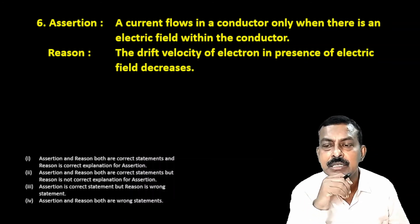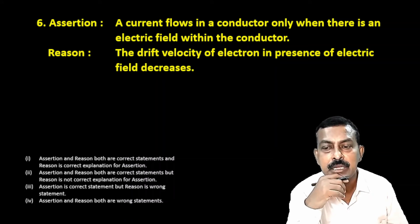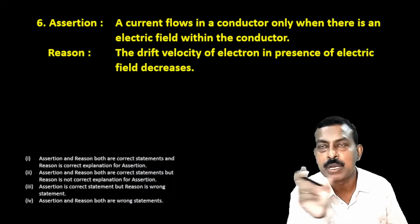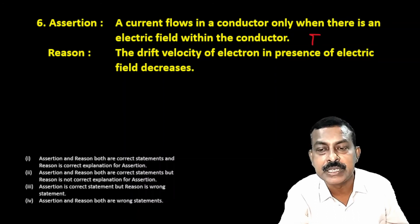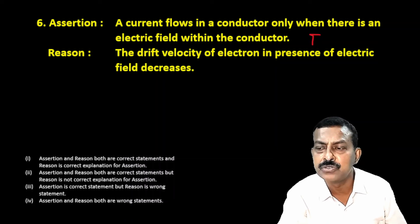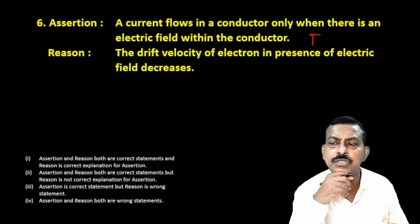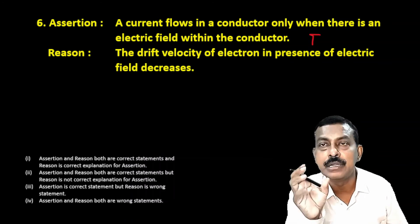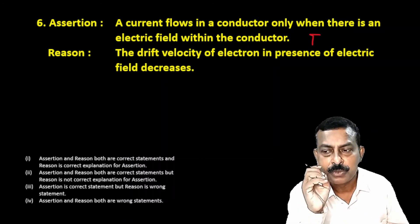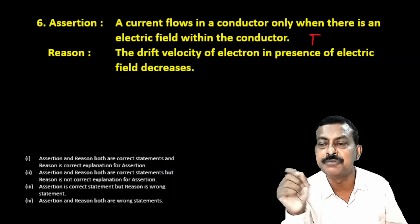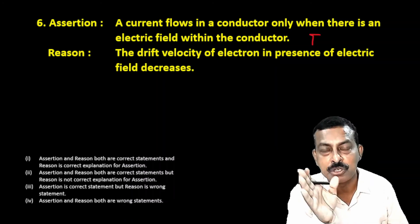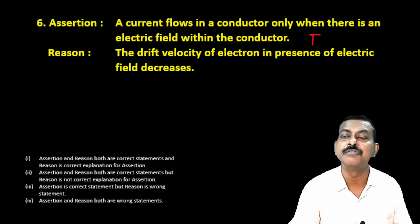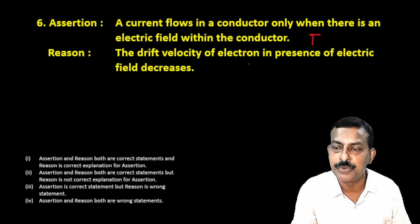Next question. Assertion: current flows in a conductor only when there is an electric field within the conductor. This is true — when an electric field is applied, current flows. Reason: the drift velocity of electrons in the presence of electric field decreases. This is incorrect. Without any applied field, free electrons are in random motion and their effective drift velocity is zero. When a potential difference is applied, an electric field is set up, and electrons begin to drift, so drift velocity increases. Therefore assertion is true, reason is false — third option is correct.